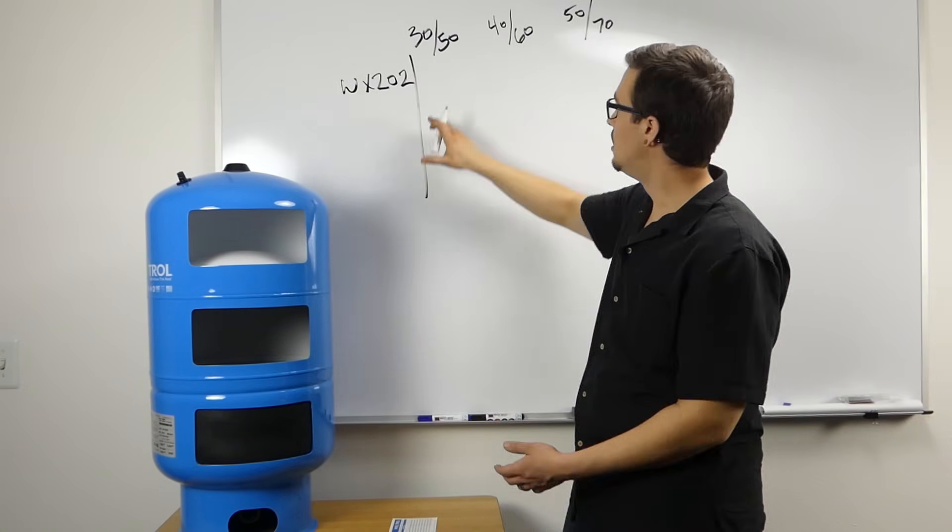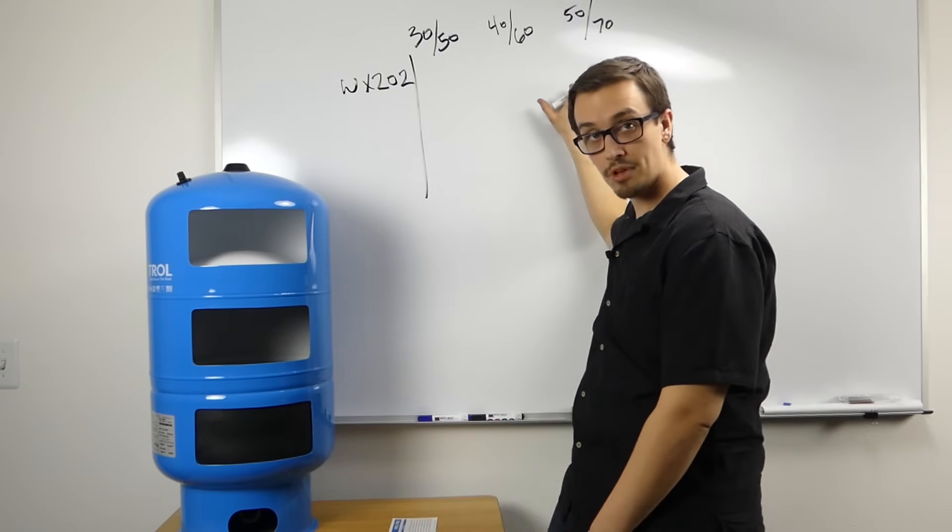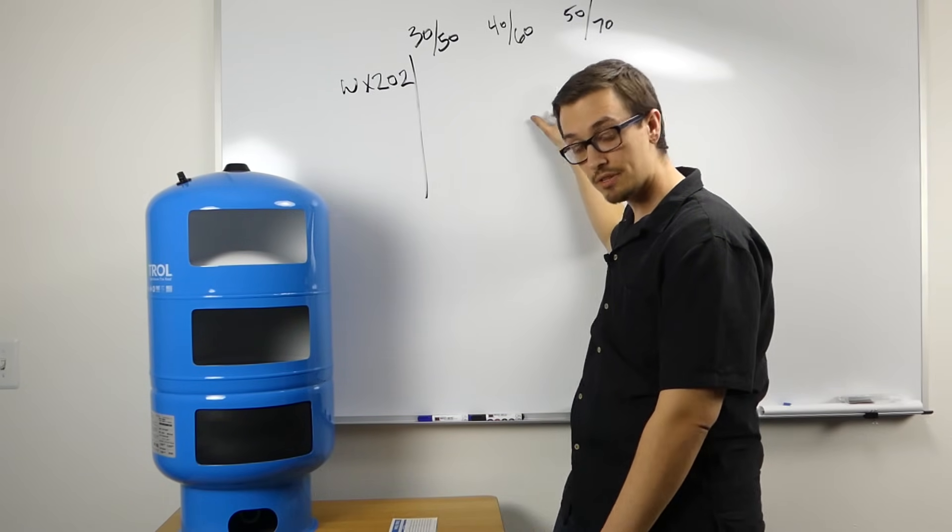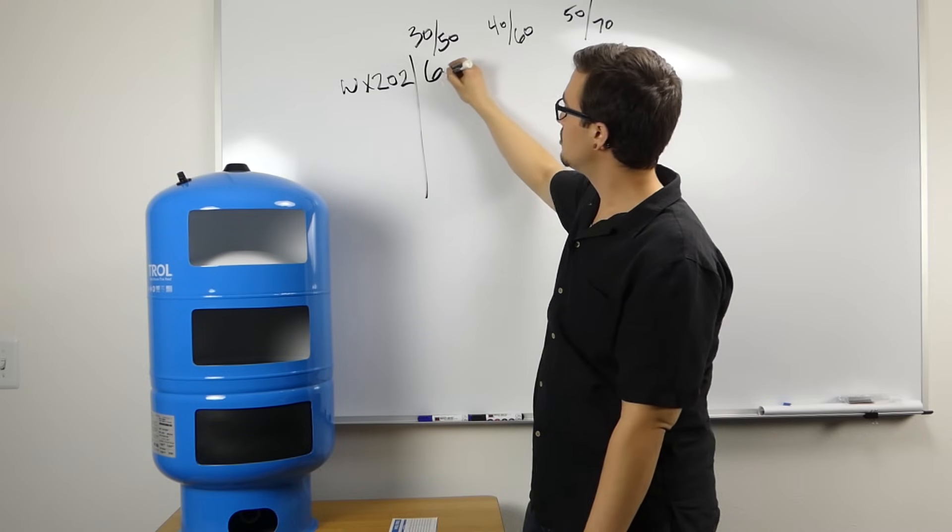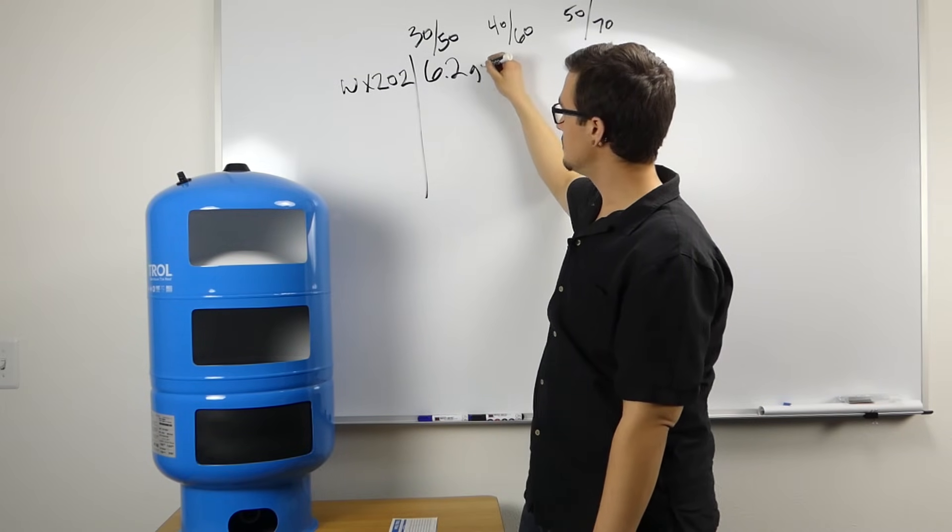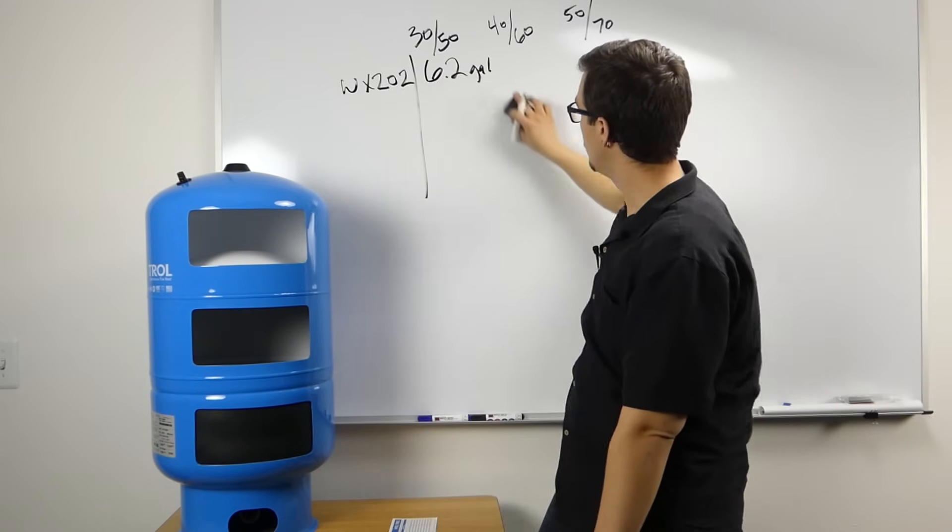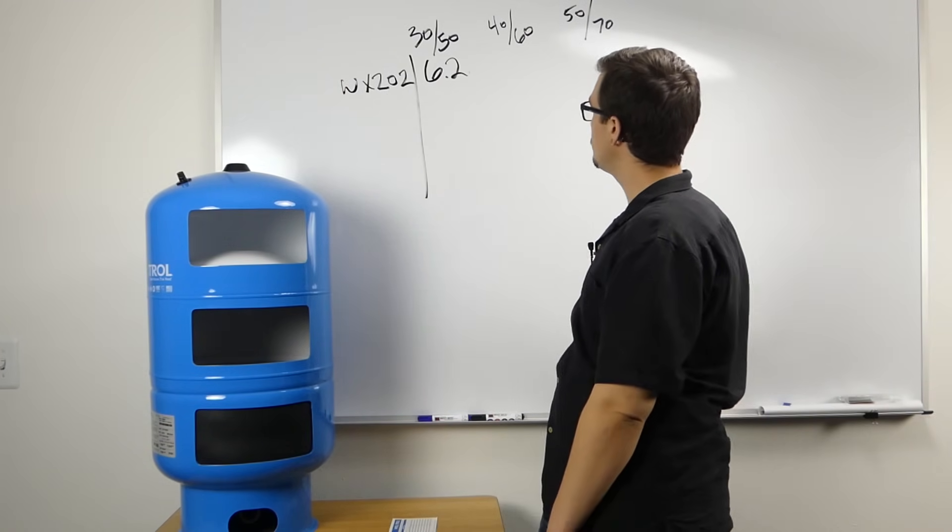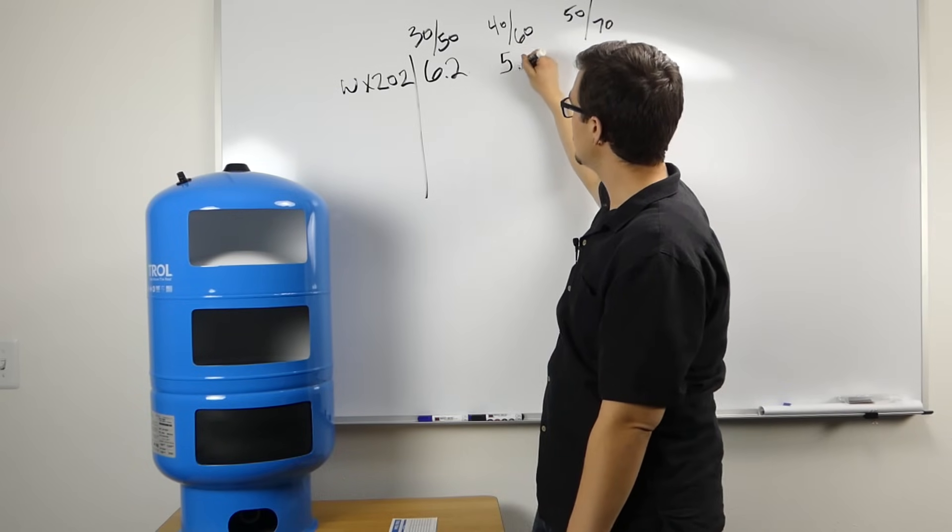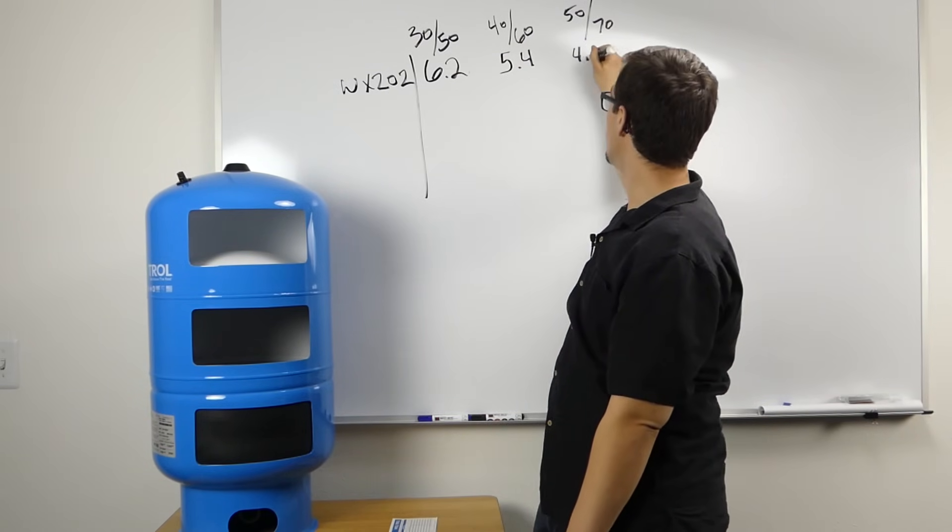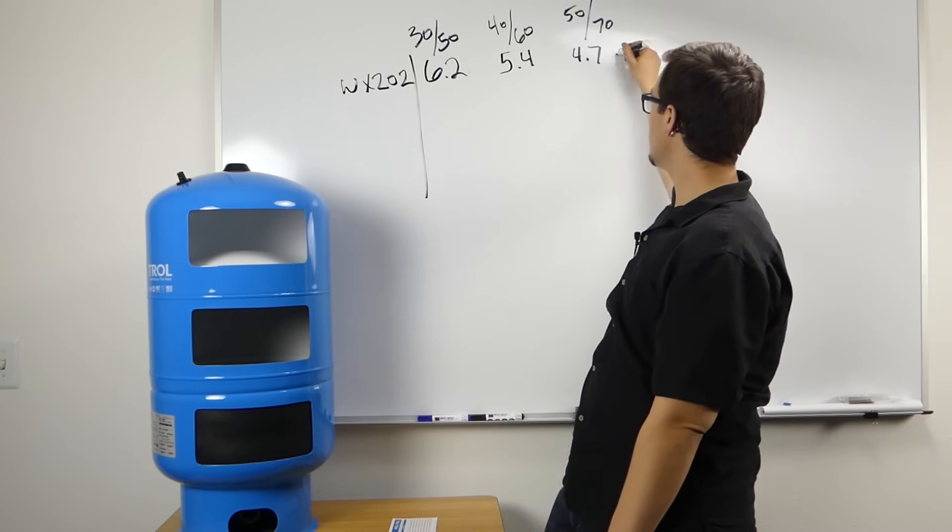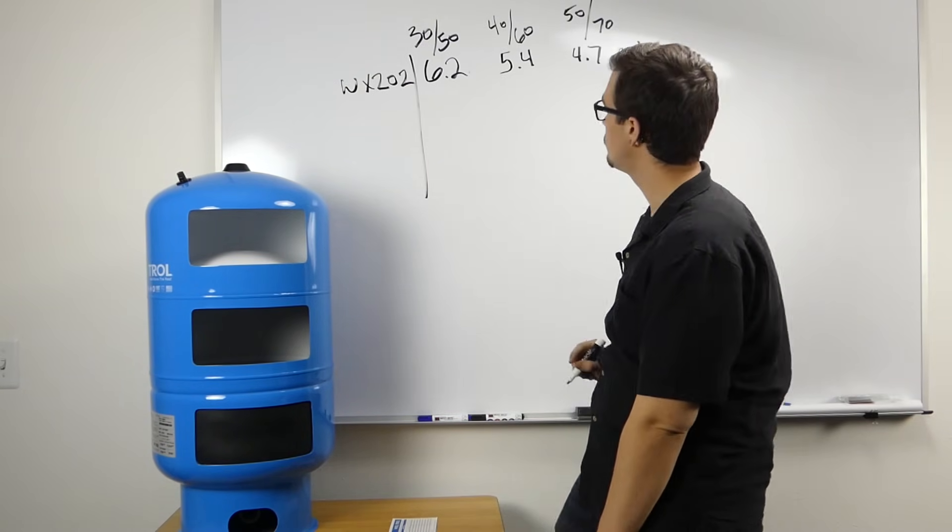We've got a few different drawdown capacities that actually apply to this pump. At 30/50, you've got 6.2 gallons. At 40/60, it's 5.4, and then 4.7 at 50/70. This is gallons of drawdown.